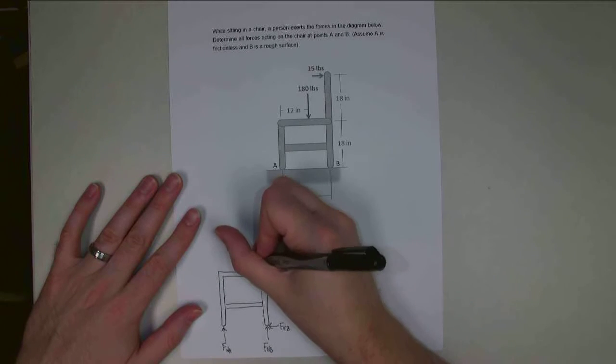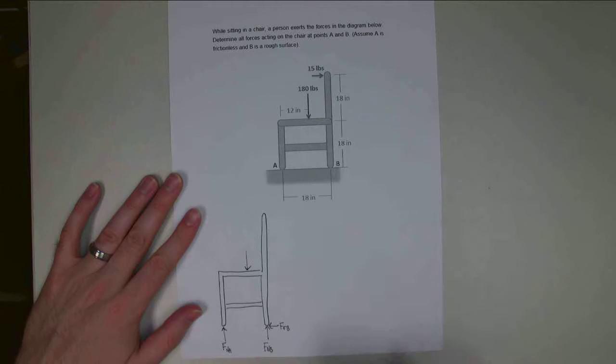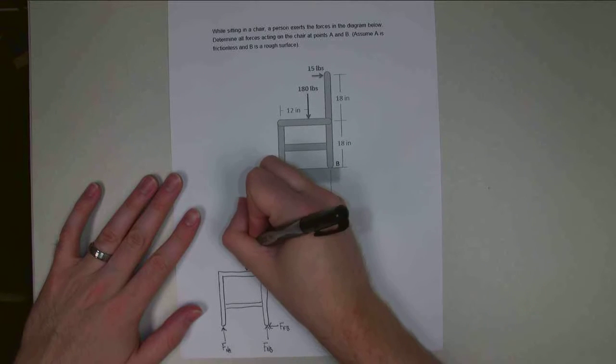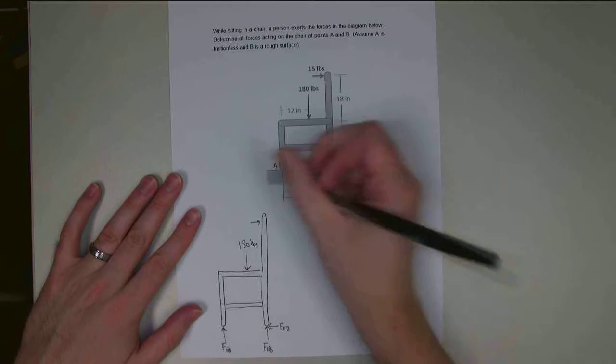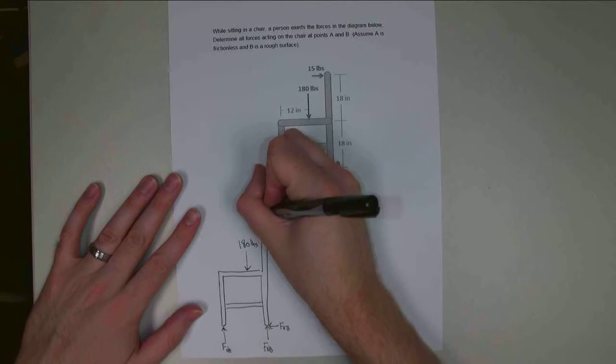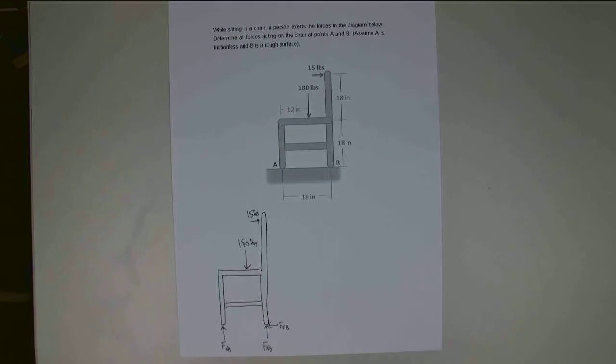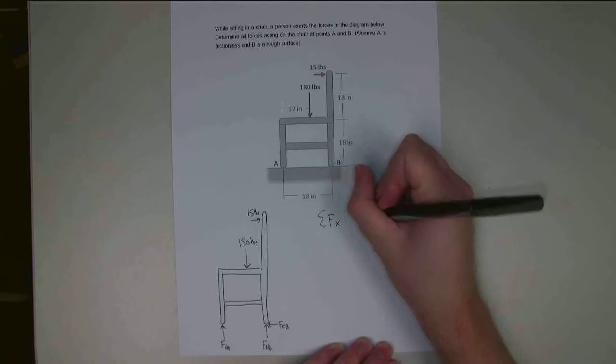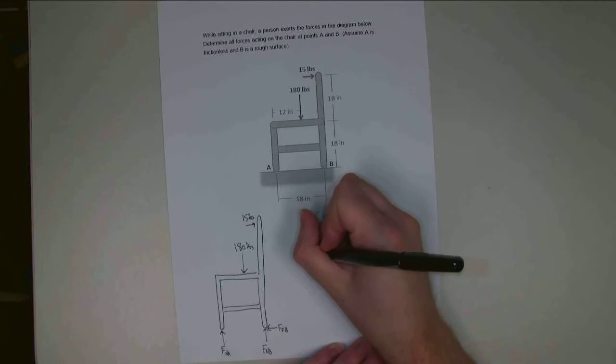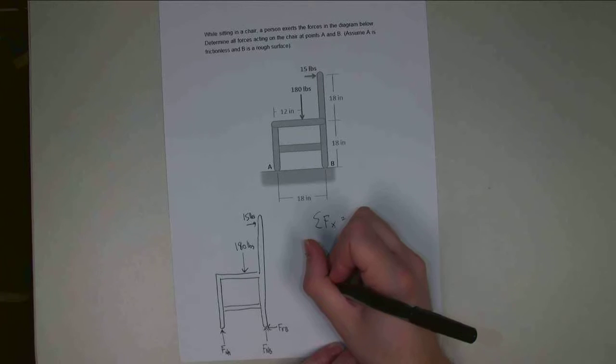Alright, so I also have this force on the seat of 180 pounds and a force on the back of the chair for 15 pounds. Alright, so before I start labeling dimensions, I'm actually going to start writing out my equations. So this is my free-body diagram. I want to know the sum of forces in the x, sum of forces in the y, and then the sum of moments.